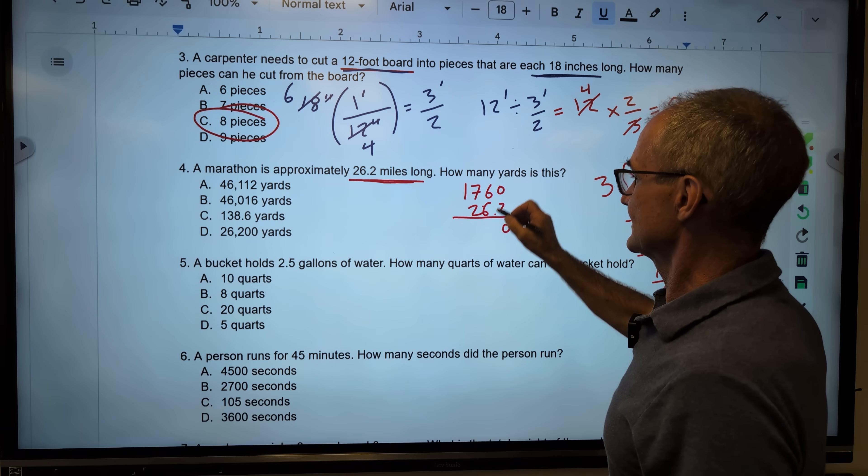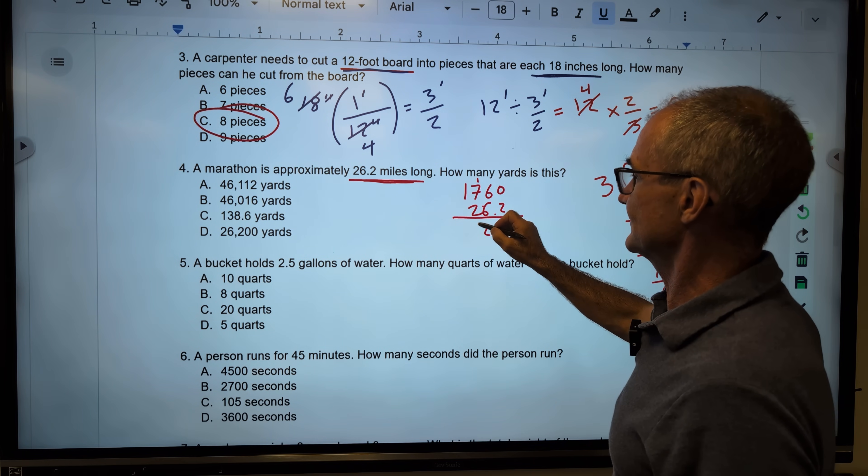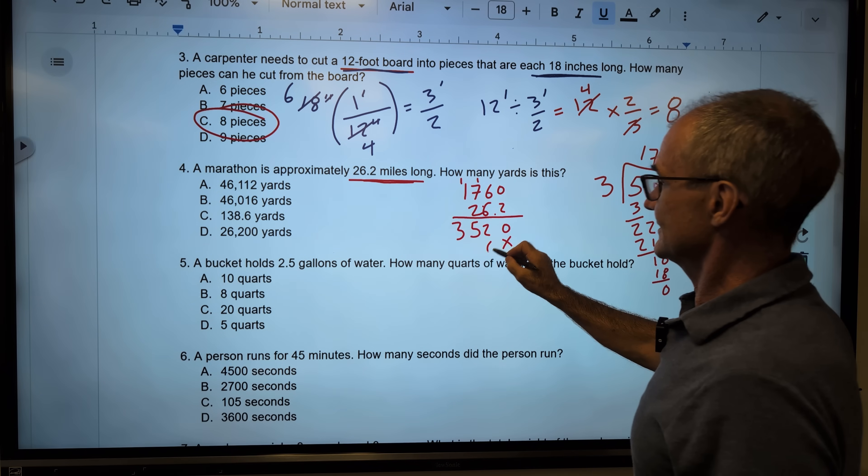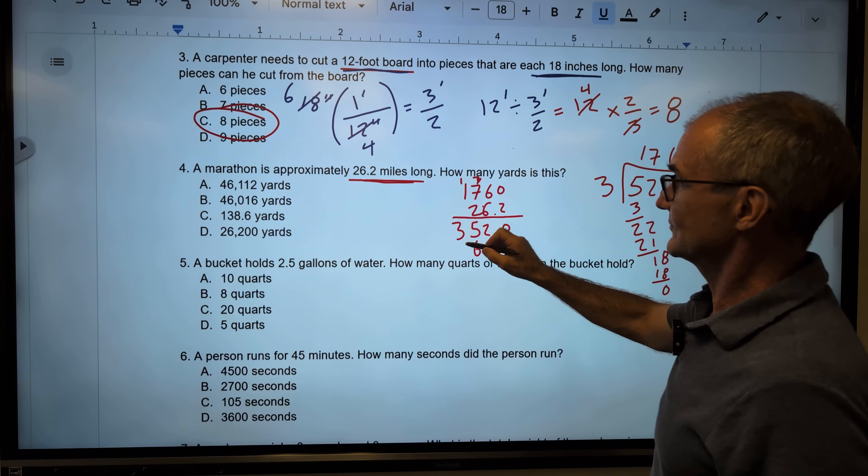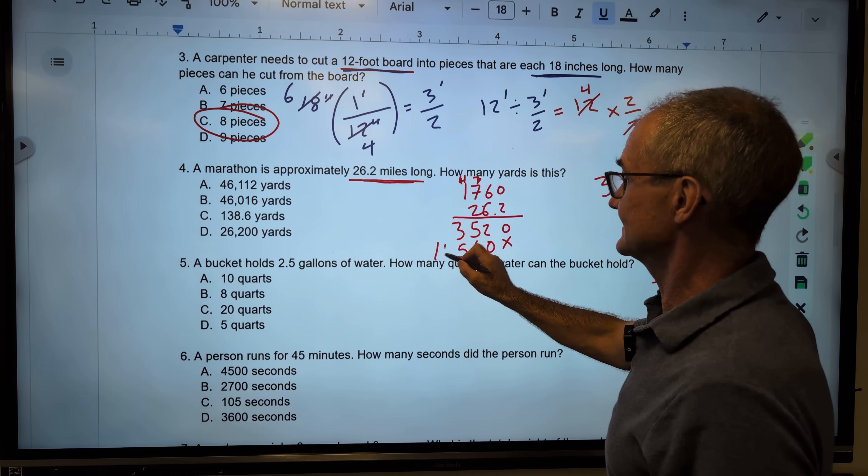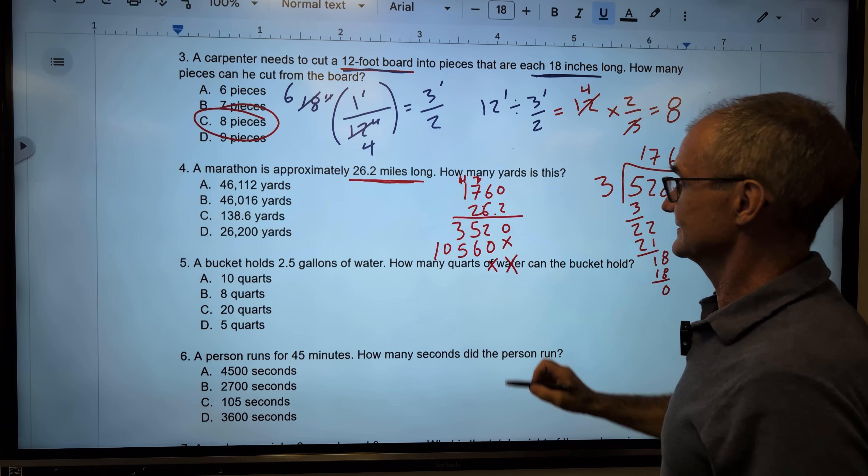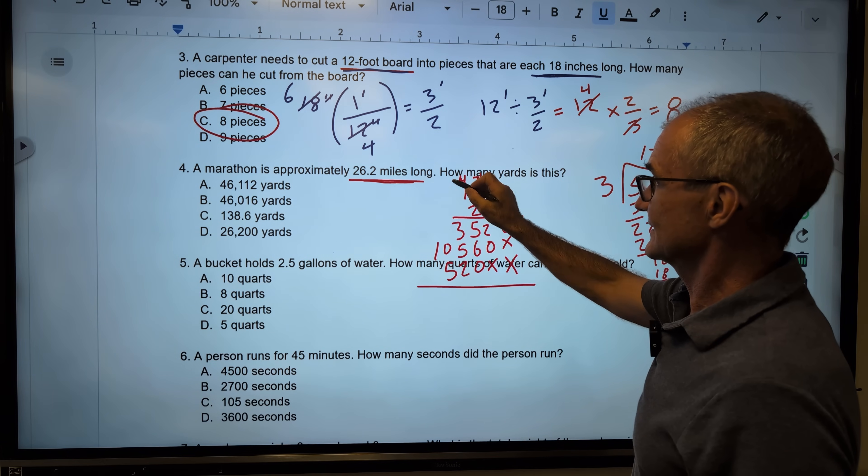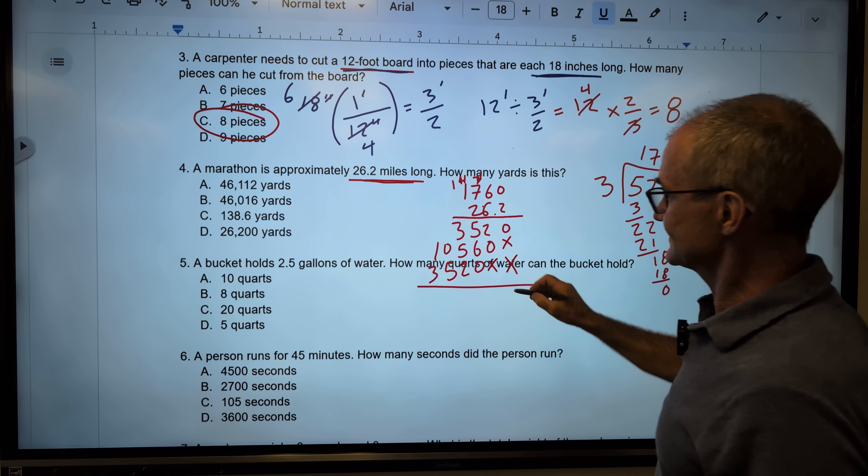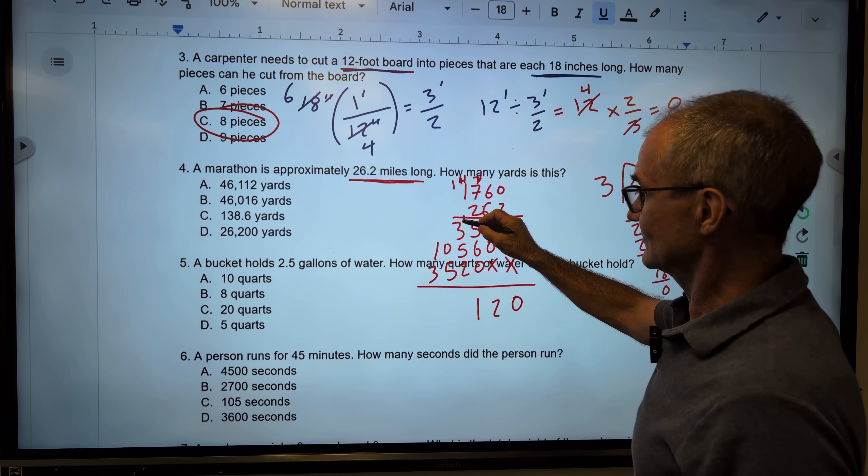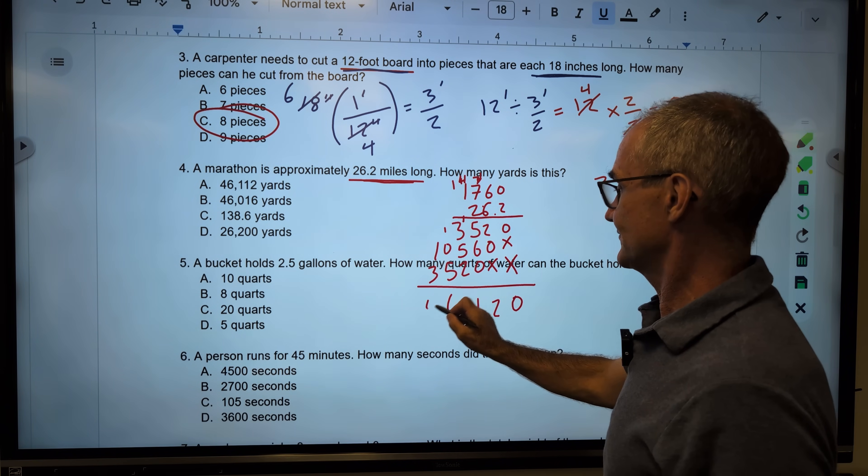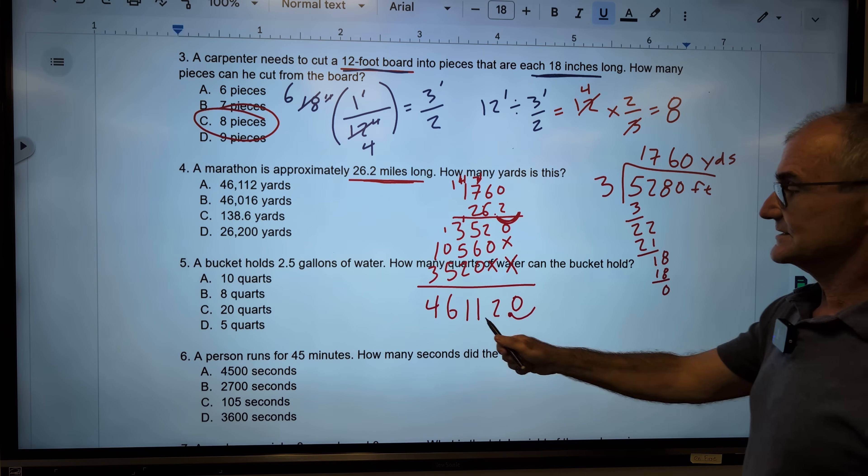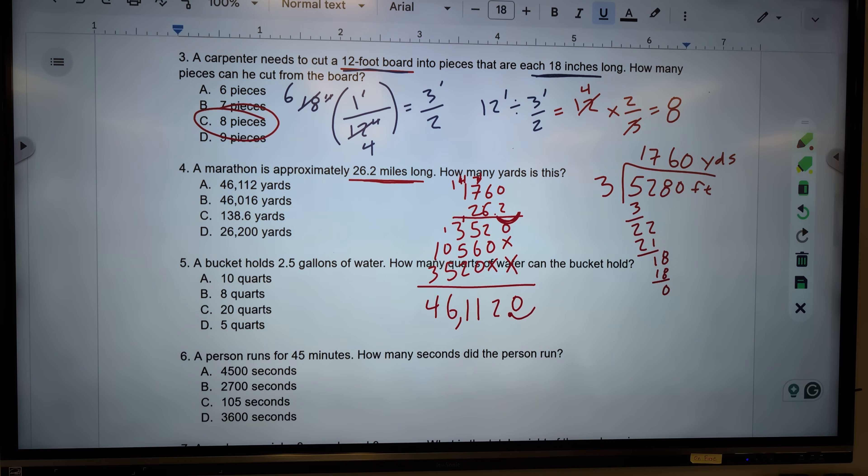First is 2 times 0 is 0. 12. Carry the 1, 14, 15. Carry the 1, 3. Then I have my placeholder. Then I'm going to do the 6, 0, 36. Carry the 3, 42, 45. Carry the 4, 10. Double placeholder here. And then 2 times 0. 2 times 6, 12. Carry the 1, 14, 15. Carry the 1, 3. Then I'm going to add straight down 0, 2, 11. Carry the 1, 11, 6, 4. Then I'm over one place right here. So I go over one place right here. 46,112 yards is my correct answer, which is answer A.